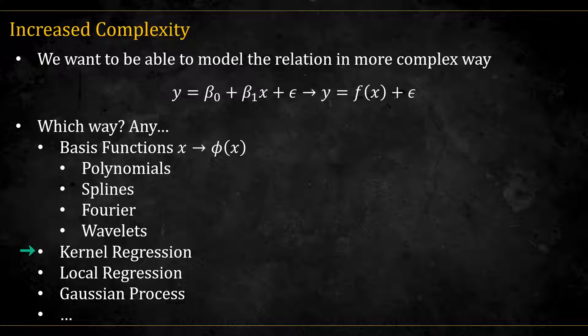We can also use kernel regressions, which are fancy moving averages. Local regressions, Gaussian process regressions, regression trees, neural networks, etc. Really any way thinkable to model f of x.